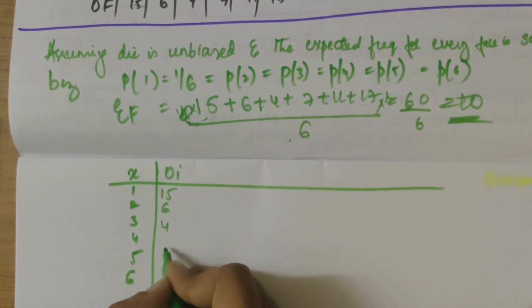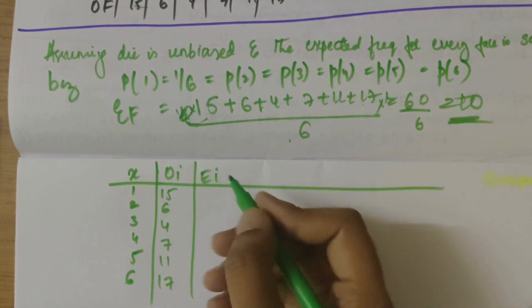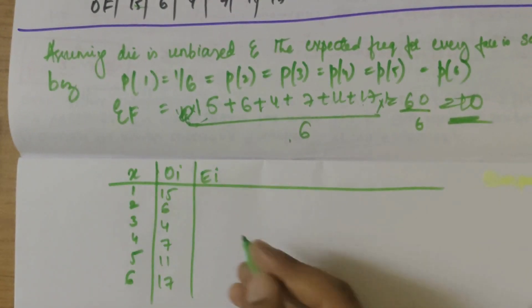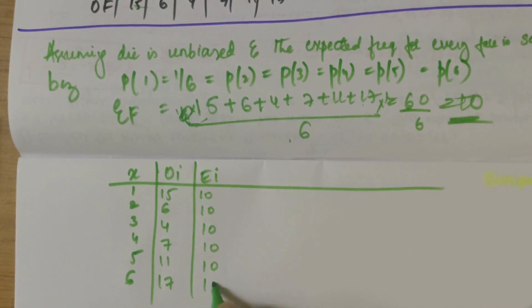So 15, 6, 4, 7, 11, and 17. Next we have EI value that we have calculated which is same for all the phases that we have got as 10, 10, 10, 10, 10, and 10.